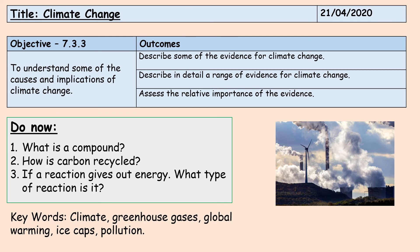Coming back to our starter questions: what is a compound? A compound is two or more elements that are chemically bonded — chemically bonded is the important part. If they are not chemically bonded, they are just a mixture. Number two, how is carbon recycled? It is used in combustion or respiration, and then absorbed into the oceans, absorbed in photosynthesis, or stored in rocks. Number three, if a reaction gives out energy, what type of reaction is it? It is exothermic — 'exo' means exits, so it gives out energy.